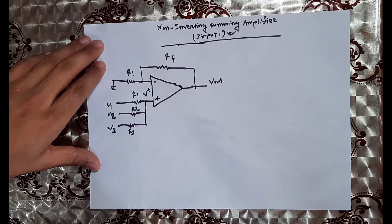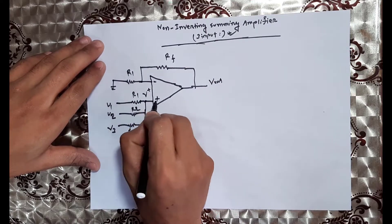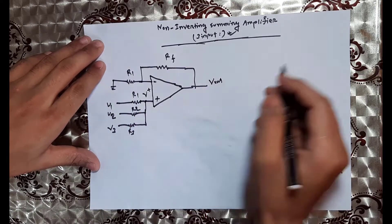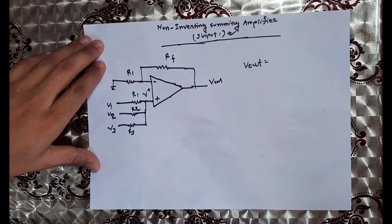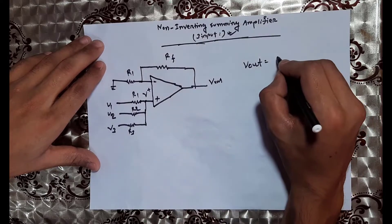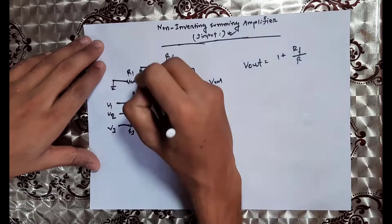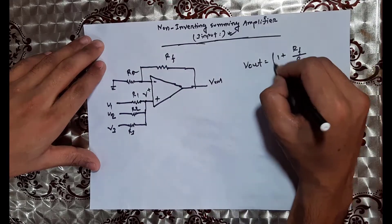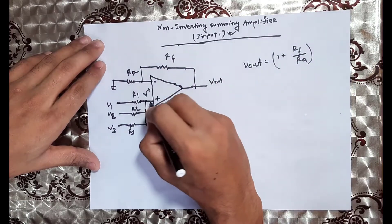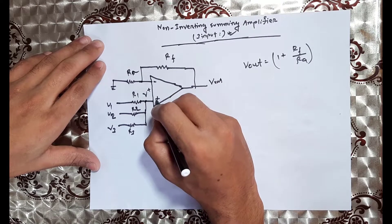Using superposition, we analyze each input. This section is labeled RA. This is the input voltage. We identify the inverting and non-inverting inputs, and V+ is the non-inverting input voltage.